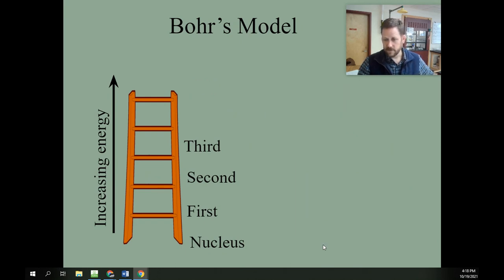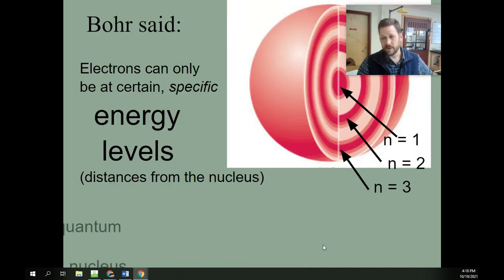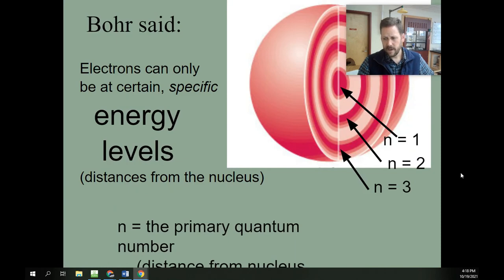We've referred to them as the first energy level, the second energy level, the third, and so on. We've talked about them as shells, and we'll learn later this is called the primary quantum number of an electron. N equals 1 means the electron's in the first shell. N equals 2 means the electron's in the second shell. And these correspond to distances from the nucleus.